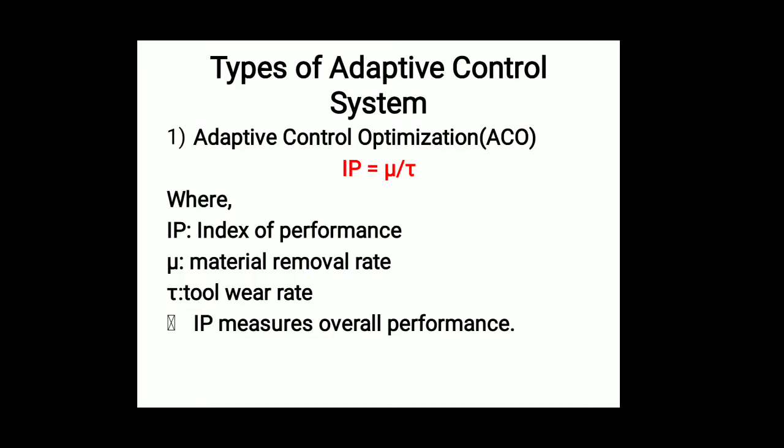Now the types of adaptive control system. The first type is Adaptive Control Optimization (ACO). The formula is IP = MU / TAU, where IP is the index of performance, MU is the material removal rate, and TAU is the tool wear rate. Using IP we can measure overall performance. The system keeps a measure on various parameters such as cutting torque, tool temperature, tool wear, and machine variables.